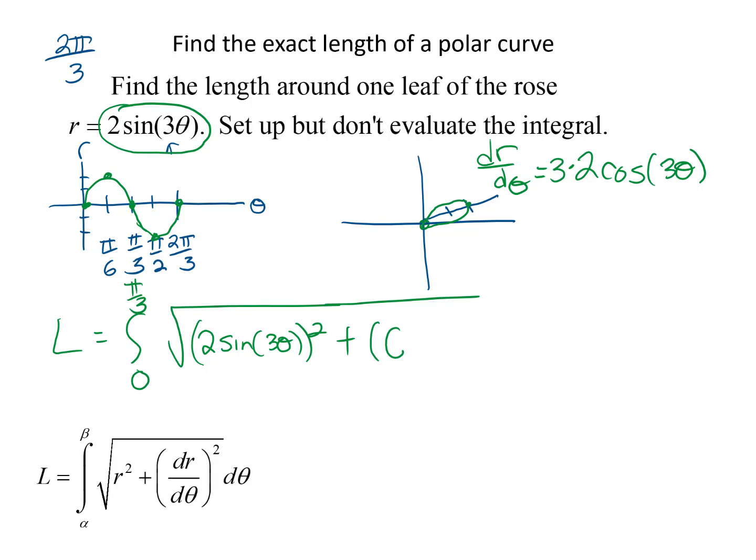So there it is set up. I think I'm actually going to take one more step and go ahead and square. We know we got to square the 2 and then write it as sin²(3θ).